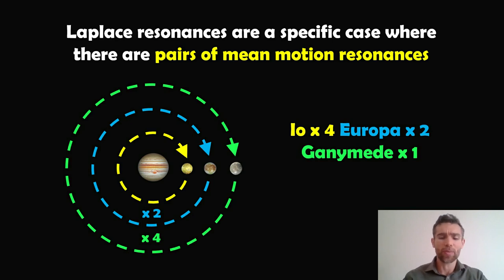On the actual orbit plot there, I've done times two, times four—it's kind of the other way around. Basically, Ganymede takes four times the period of Io to go around, which is why it's times four there. That's a Laplace resonance where you've got pairs of mean motion resonances occurring in this sort of chain. Jupiter's moons are a pretty good example of that.